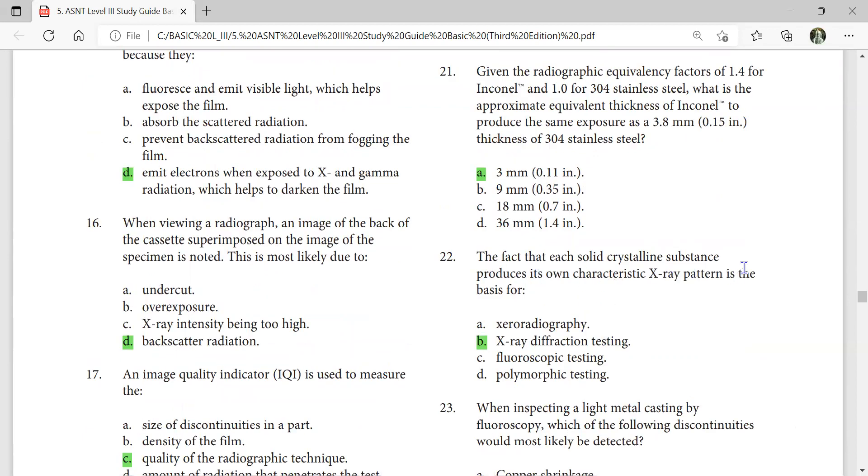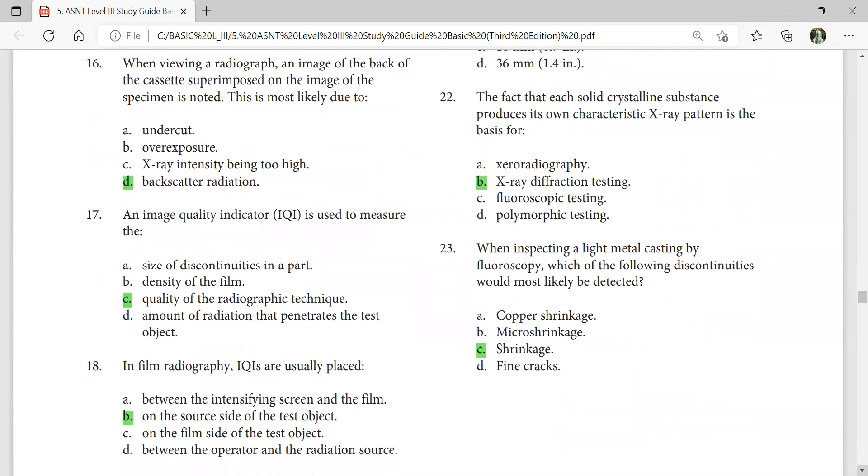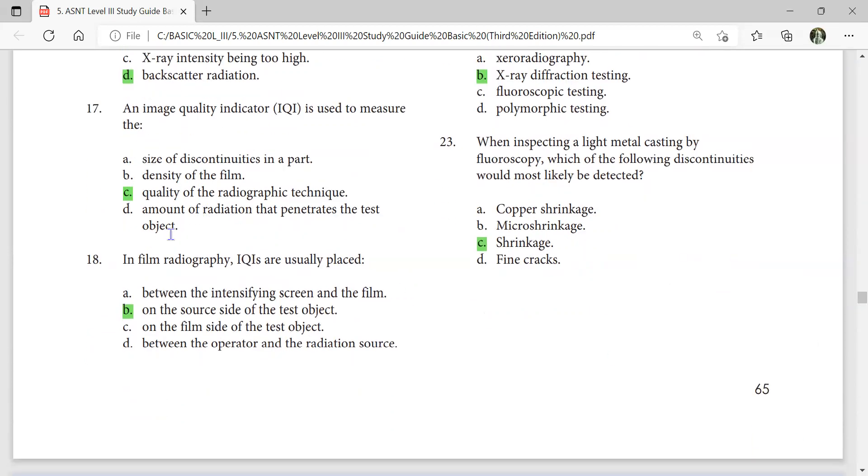The fact that each solid crystalline substance produces its own characteristic x-ray pattern is the basis of x-ray diffraction testing. When viewing a radiograph, an image of the back of the cassette superimposed on the image of the specimen is noted. This is most likely due to backscatter radiation. The image quality indicator is used to measure the quality of the radiographic technique. When inspecting light metal casting by fluoroscopy, which of the following discontinuities would most likely be detected? Shrinkage. In film radiography, IQIs are usually placed on the source side of the test object.